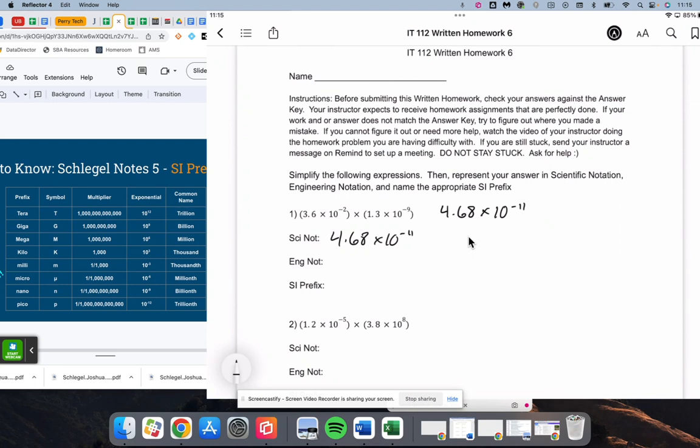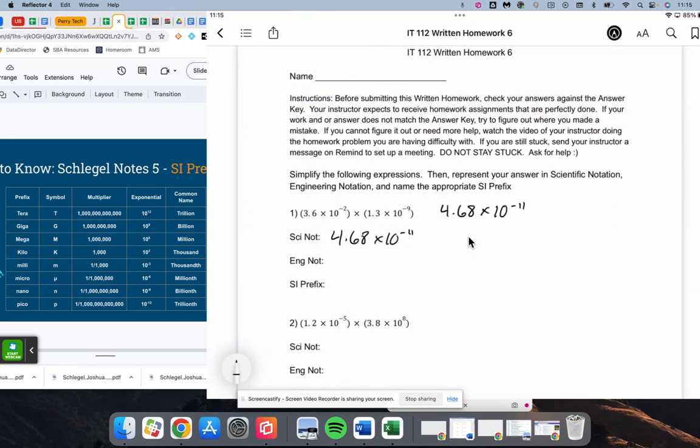To get this to engineering notation, we need to expand it, so negative 11 is going to be 10 zeros after the decimal: 2, 3, 4, 5, 6, 7, 8, 9, 10, and then 4, 6, 8.